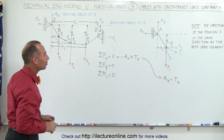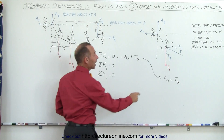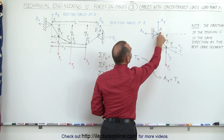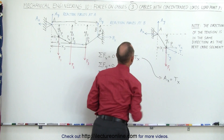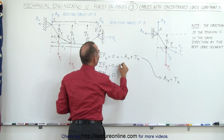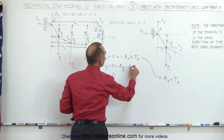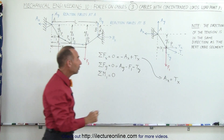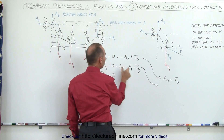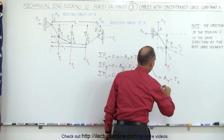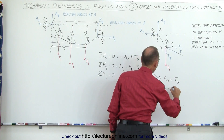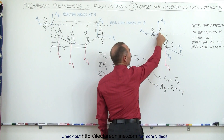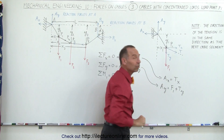Now let's add up all the forces in the Y direction. We have one additional force here: the force due to the load acting downward, the tension in the Y direction also acting downward, and the reactionary force at A in the vertical direction acting upward. Therefore, A sub Y minus the load minus the Y component of the tension equals zero. Solving for A sub Y, we get: A sub Y equals F sub 1 plus T sub Y — the reactionary force at A in the Y direction equals the load plus the tension in the Y direction.